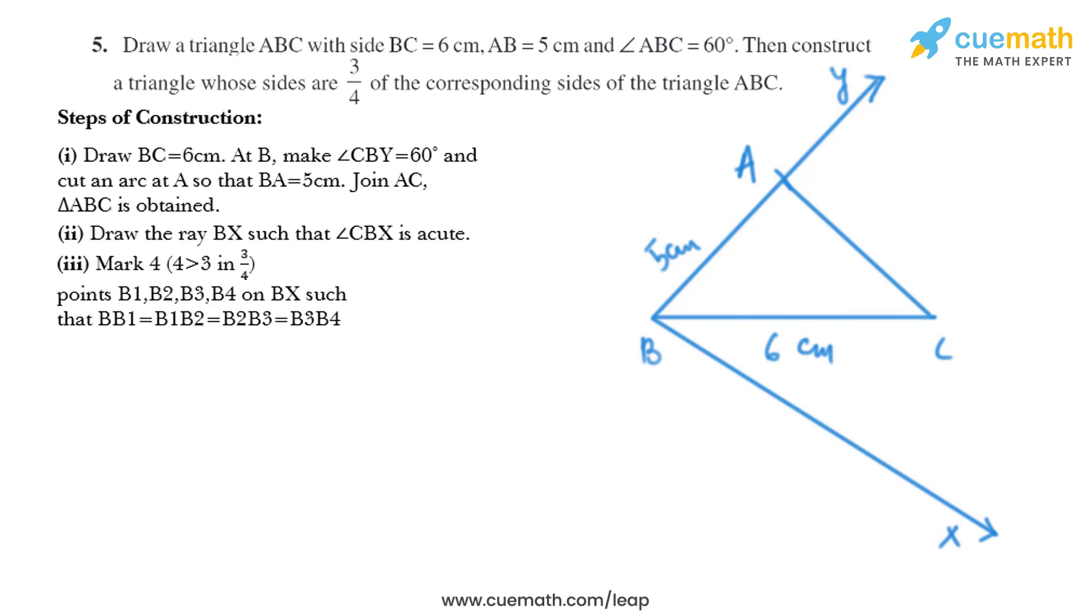So we'll mark four points like this such that BB1 equals B1B2 equals B2B3 equals B3B4. Now in the next point we need to join B4 to C and draw B3C' parallel to B4C to intersect BC at C'.